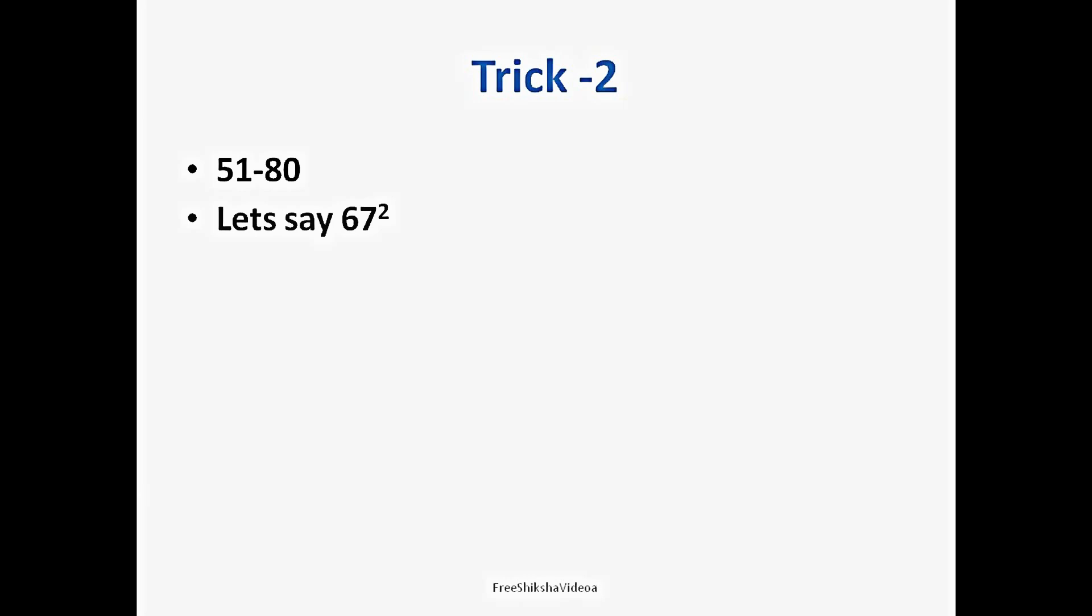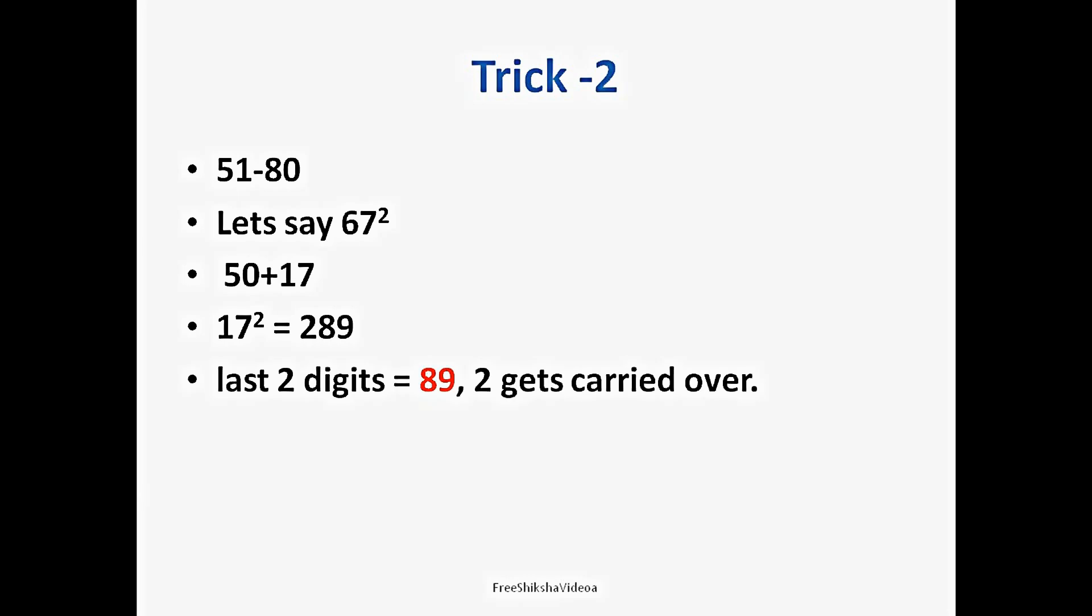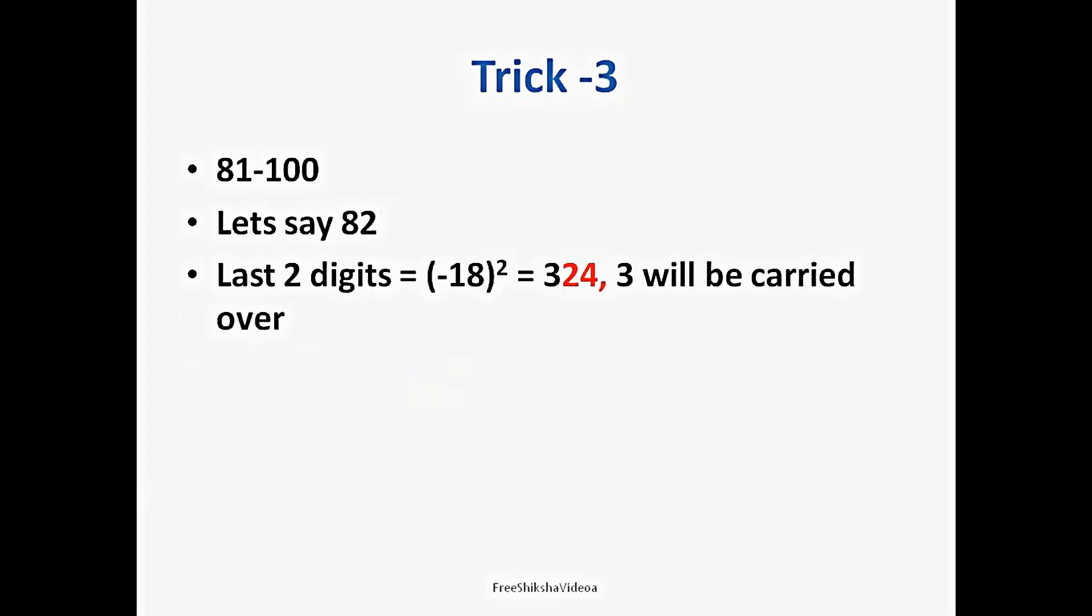Now trick 2. Suppose we have to find the squares of numbers between 51 and 80. Let's say 67 square. That can be written as 50 plus 17. And what is 17 square? That is 289. Obviously this is going to help us in finding out the last two digits. And yes, directly we can write 89 as the last two digits of 67 square, so 2 gets carried over. Now the first two digits are 25 plus 17 plus 2 equal to 44. 25 was a standard number as we said before. This time we will not be subtracting 17 because 17 is added to 50. So 17 will be added this time, and we will add 2 as carry over, and that will give us 44. The number will be 4489.